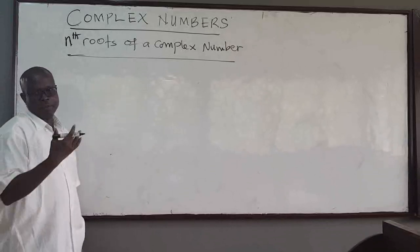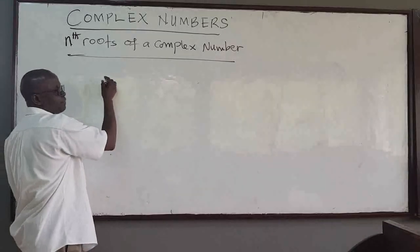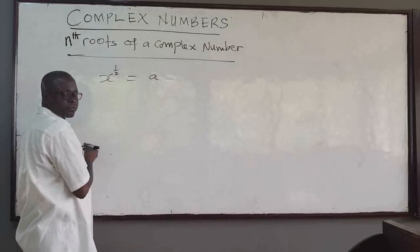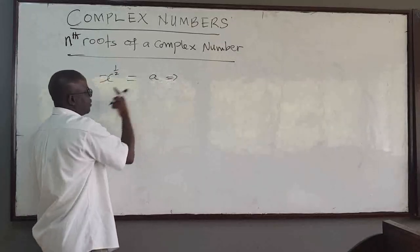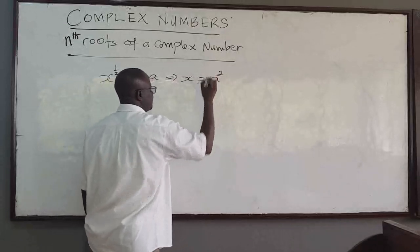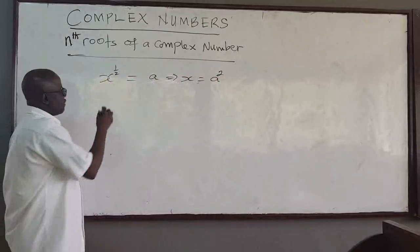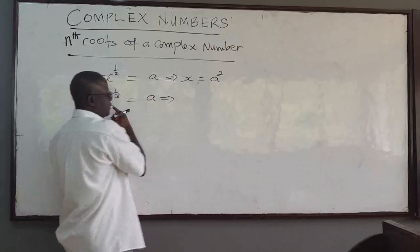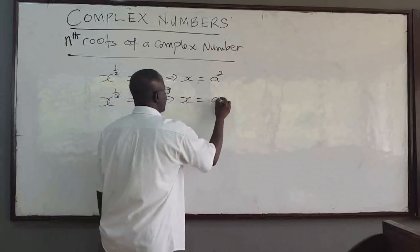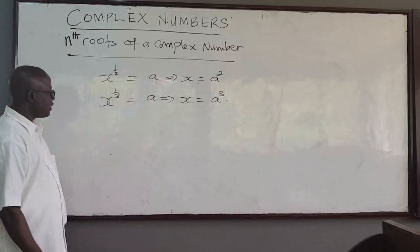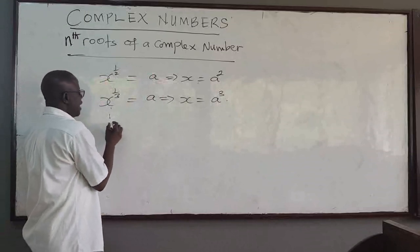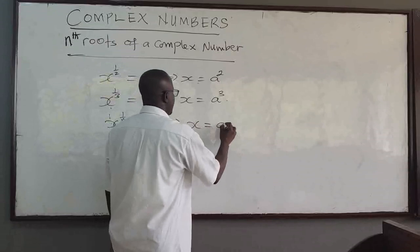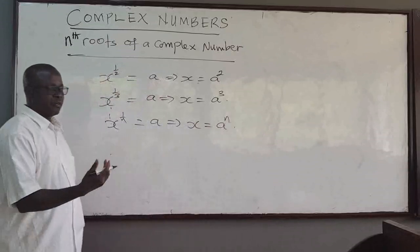Just as we find the roots of a real number — for instance, when you say the square root of x, that means x to the one-half is equal to some real number, let's call it a. This implies that x will be equal to a squared. And the cube root of x, which is x to the one-third, if that equals some number a, then x equals a raised to the power of 3.